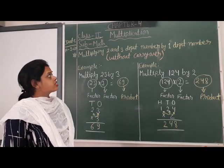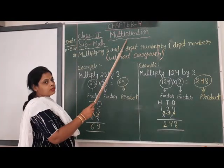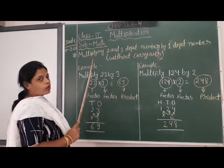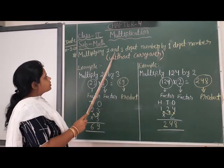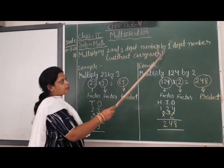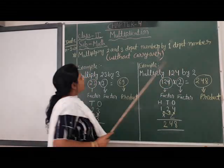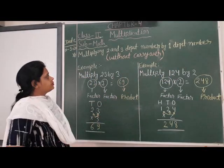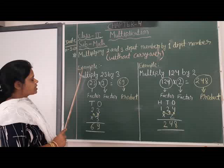Good morning all friends. Let us continue. Math Chapter 4 Multiplication. Today our topic is multiply 2 and 3 digit numbers by 1 digit number without carrying.